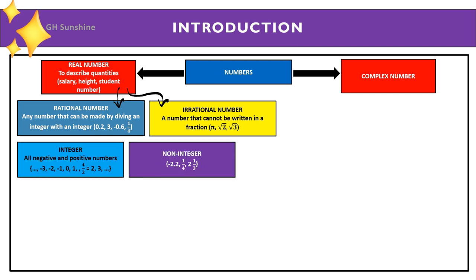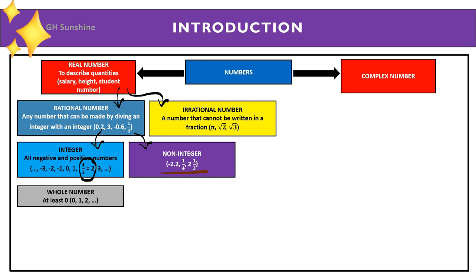Rational numbers are divided into integers and non-integers. Integers include all negative and positive whole numbers. Non-integers include numbers like negative 2.2, 1 over 4, or 2 and 1 over 3 — numbers in decimal or fraction form. However, note that a fraction like 4 over 2 simplifies to 2, which is an integer.